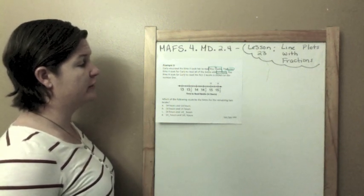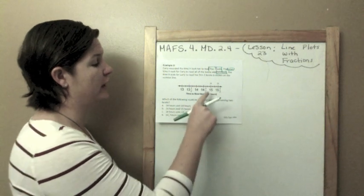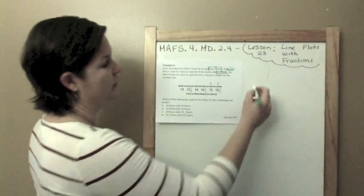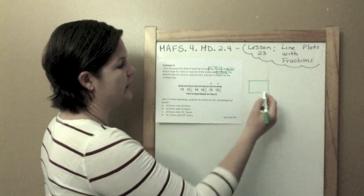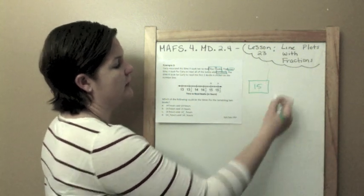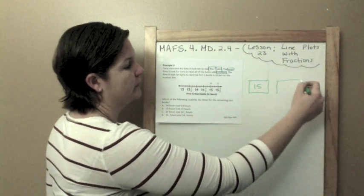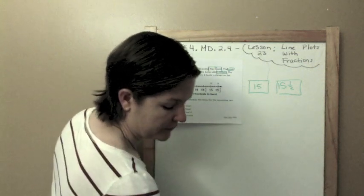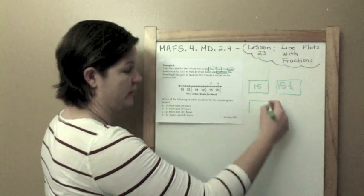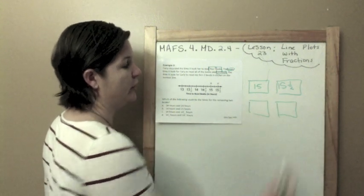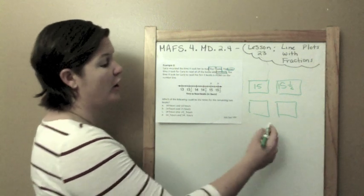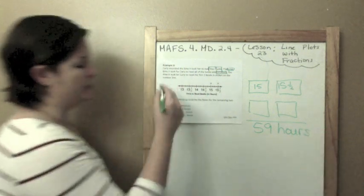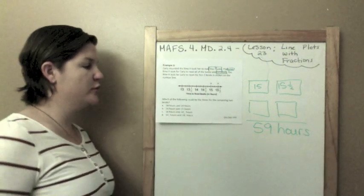The time it took for Carly to read the first two books is shown on the number line. So one book took her 15 hours to read, the other book took her 15 and a half. So let me just model here visually what's going on. Here's a book, we know it took her 15 hours to read the first book. It took 15 and a half hours to read the second book. It took, we don't know and we don't know, to read the third book and fourth book. But all together it was 59 hours. Which of the following could be the times of the two remaining books?